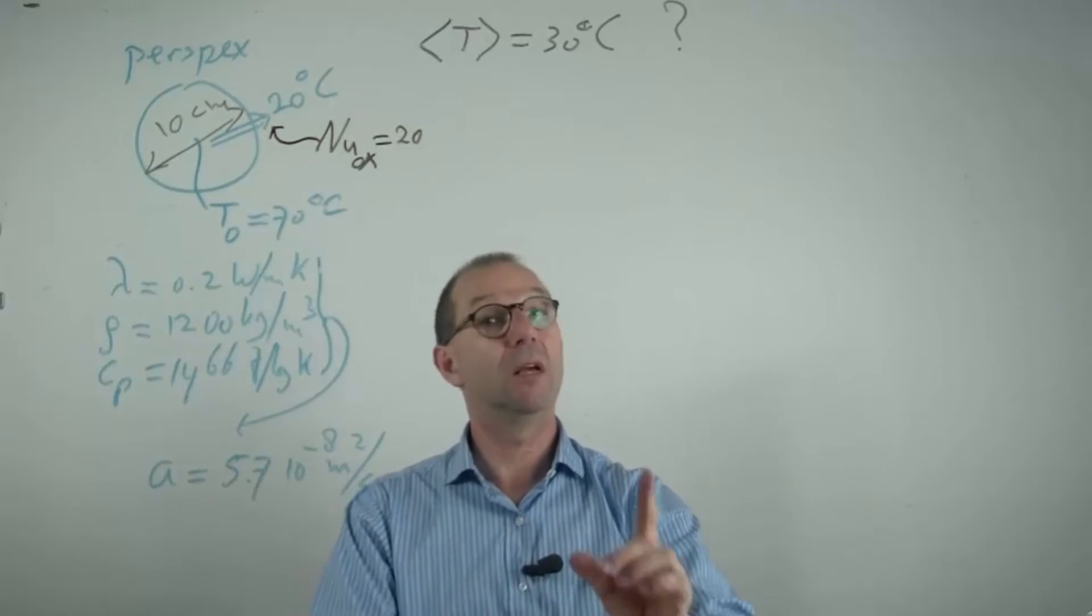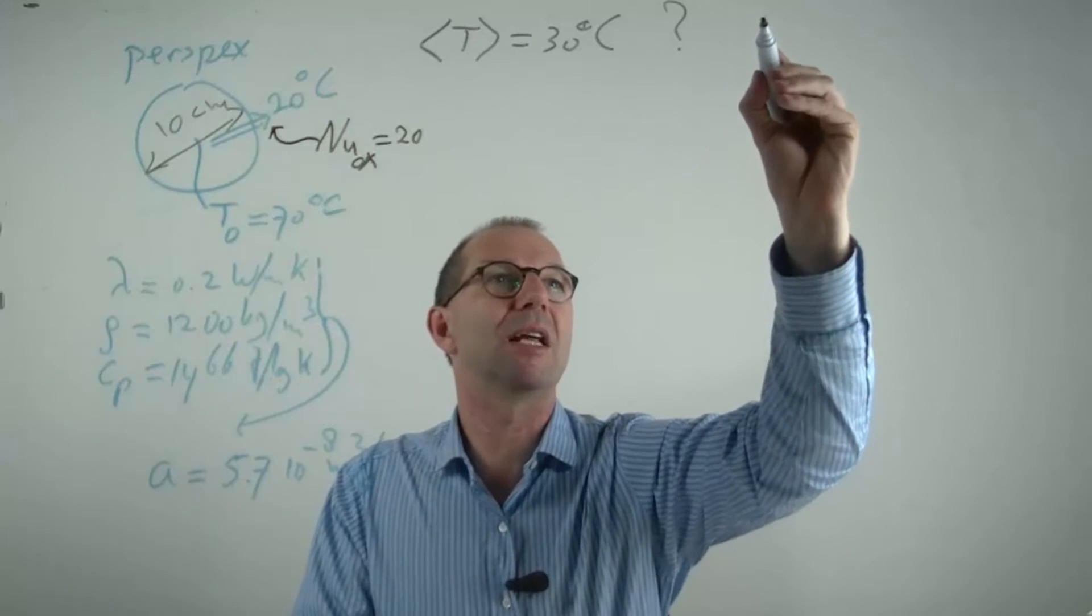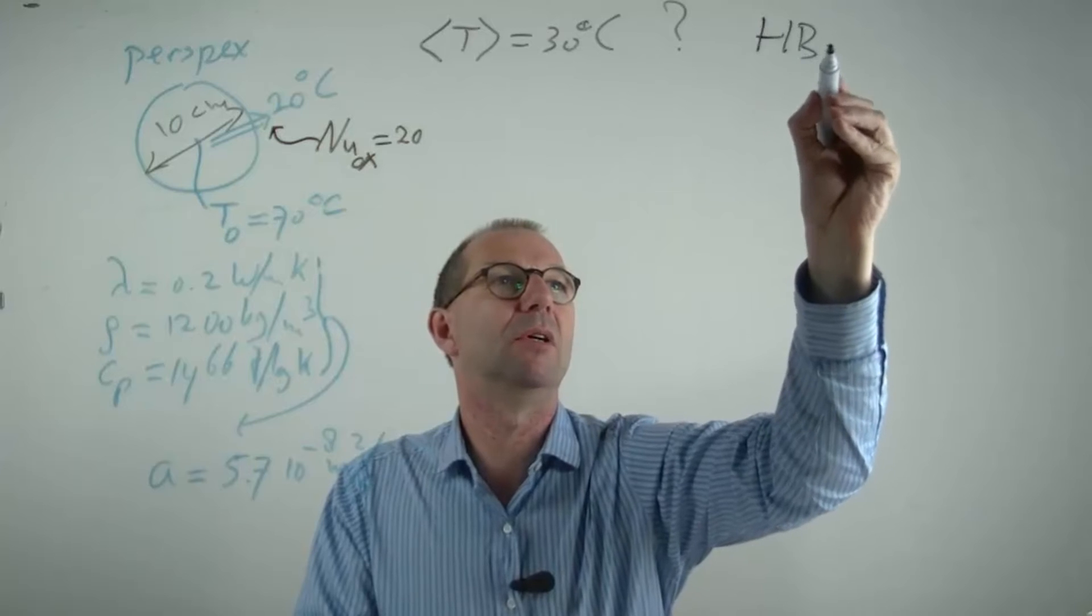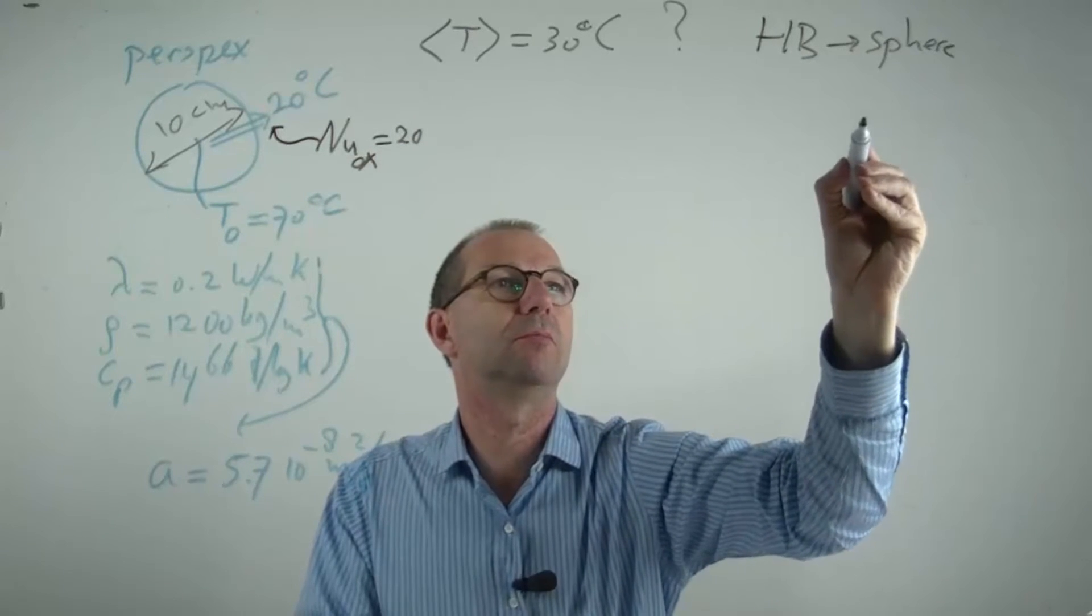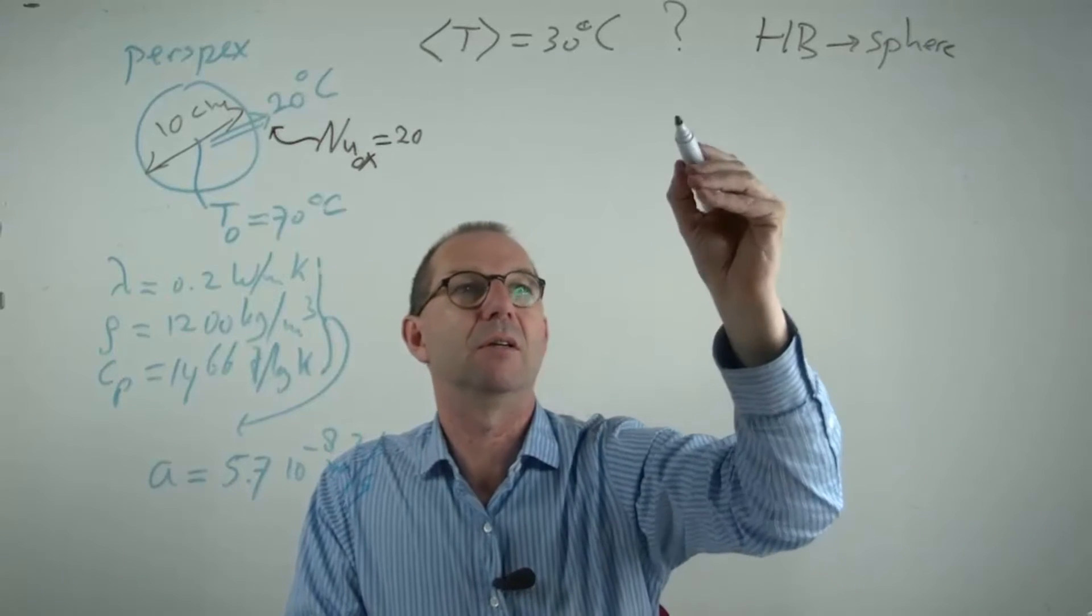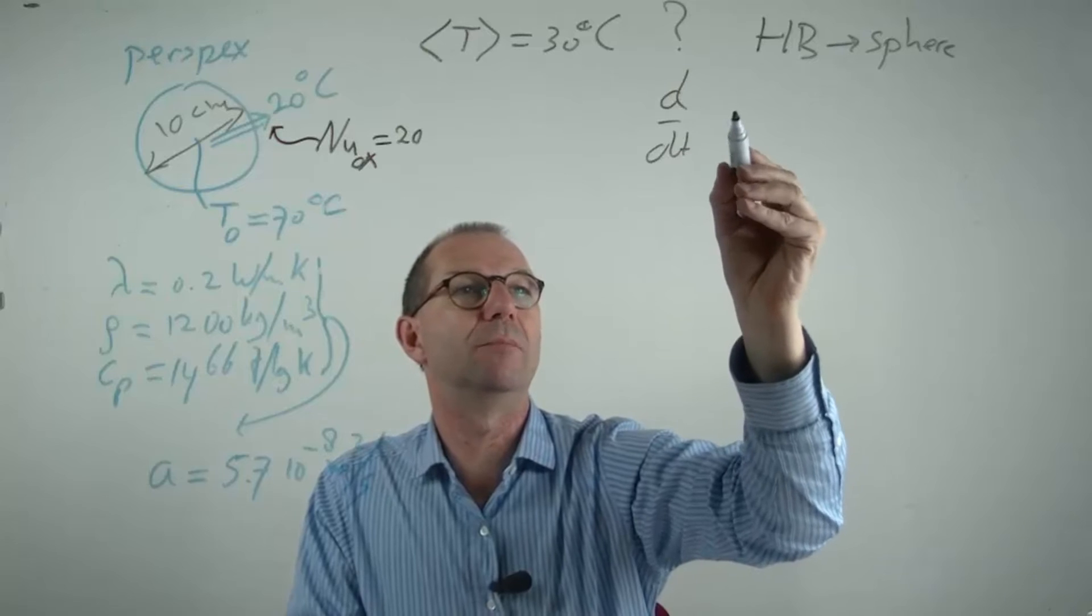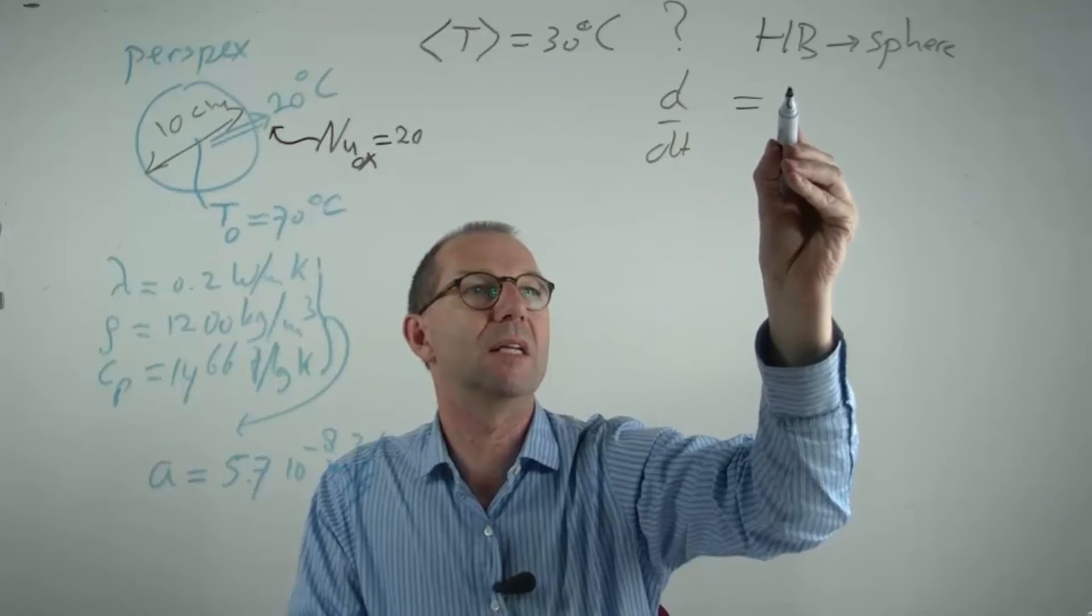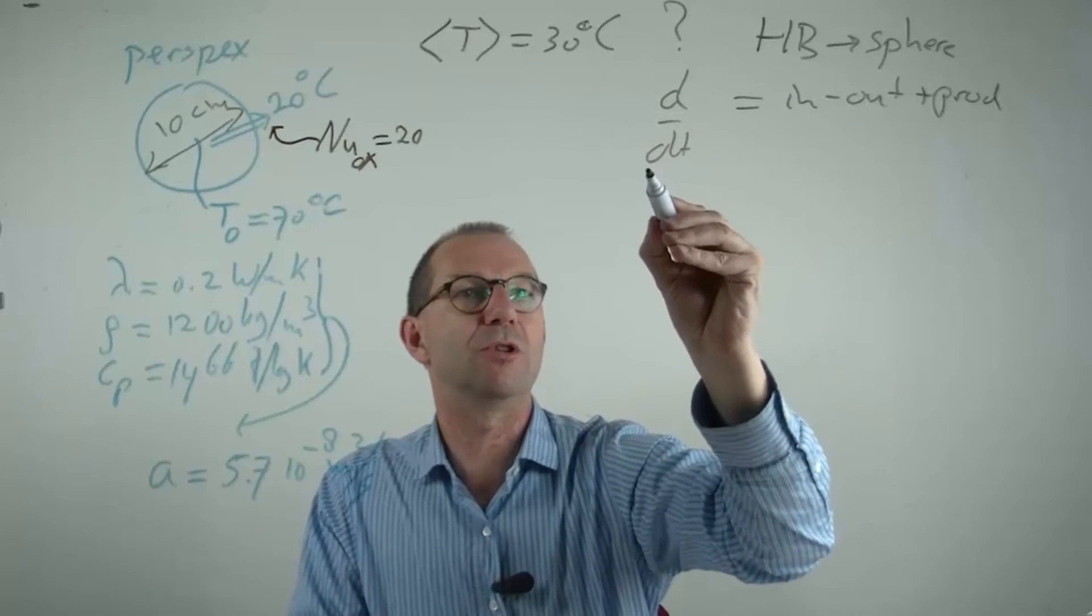What's the alternative? We can still try and set up a balance. So we're going to answer this by setting up a heat balance over the sphere. That is our control volume. And the energy, as it's unsteady, changes over time. So the d/dt equals in minus out plus production, as always, has here a non-zero term.